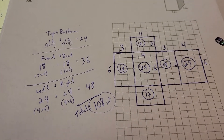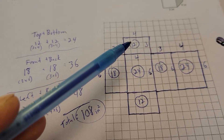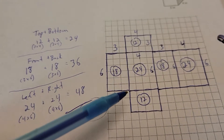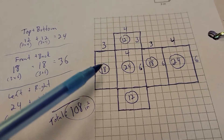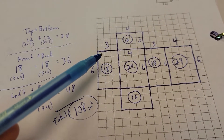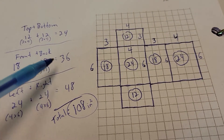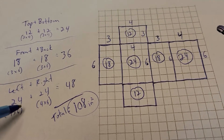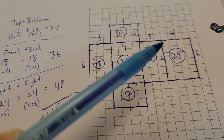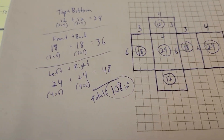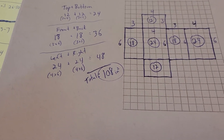So here's what we're going to do: find the area of each shape. The top and bottom are each three-by-four, giving twelve and twelve for twenty-four total. The front and back are three-by-six and another three-by-six, that's eighteen and eighteen. Left side and right side, four-by-six and a four-by-six, you've got twenty-four and twenty-four. You add up all your pieces, and you get 108 square inches.